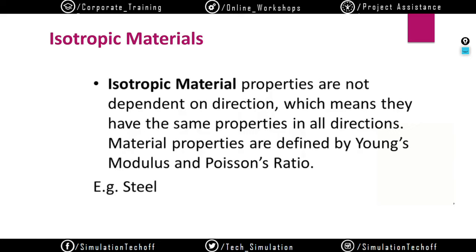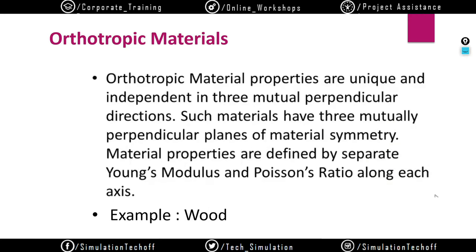For anisotropic material, in each direction — X-axis, Y-axis, Z-axis — the properties can change rapidly. For Young's modulus alone, you have to define three values: Young's modulus in X, Y, and Z. Similarly three values for Poisson's ratio. Orthotropic material properties can vary in three mutually perpendicular directions. The best example is wood — when you cut a tree, the core is much harder to penetrate, but from the outer side you can easily penetrate. The outer side is much less dense compared to the inner core, which has more strength.